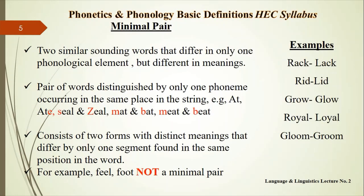Minimal pairs are pairs of words distinguished by only one phoneme occurring in the same position. For example, 'at' and 'date.' A minimal pair consists of forms with distinct meanings that differ by only one segment or phoneme in the same position in the word. For example, 'seal' and 'zeal.' In contrast, 'feel' and 'foot' are not a minimal pair. Further examples include: rack and lag, red and lid, gloom and groom.